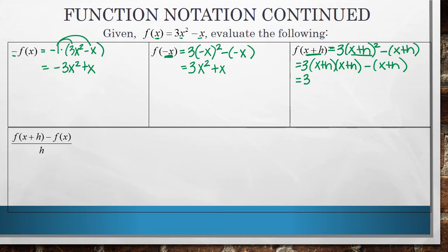So now I'll distribute this through. So I get x times x is x squared. x times h is xh. h times x, we can also write as xh because 2 times 3 is the same thing as 3 times 2. Multiplication is commutative so you can change the order that it's multiplied and you'll still get the same answer. So hx is the same thing as xh. The reason I wrote it that way is so that you can see that those are both the same terms. And then h times h is h squared.